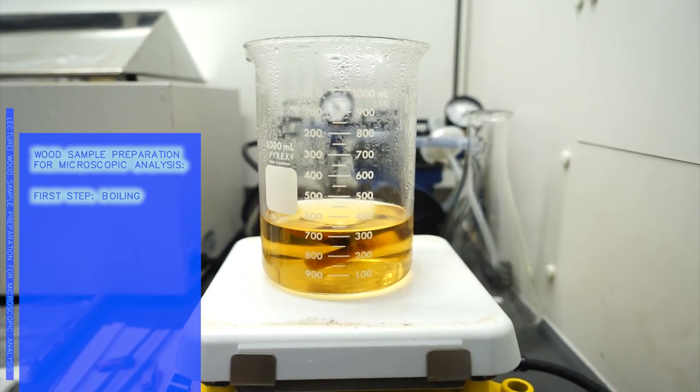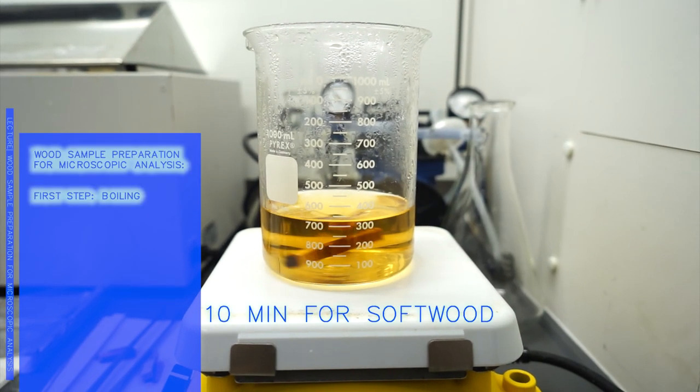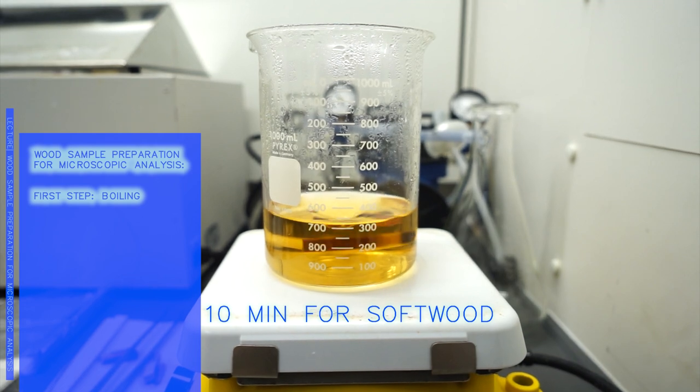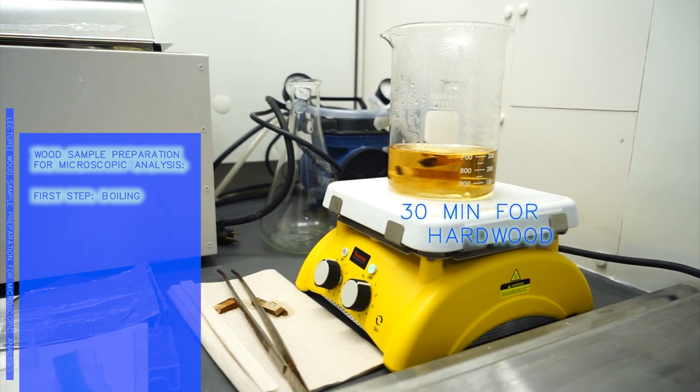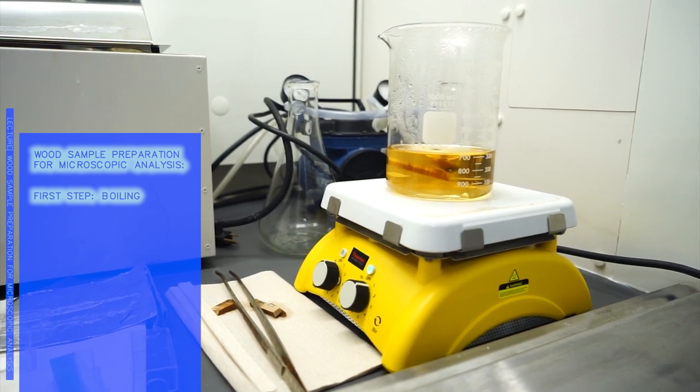The very first step that we have to take with the wood that we are going to cut to get our anatomical sections is to boil it. The classic and standard way to do it, around 10 minutes for softwoods and probably around half an hour for some of the hardest hardwoods that we have out there.